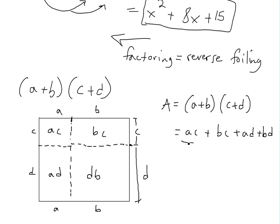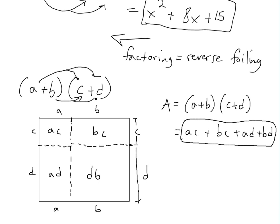So the total area is the summation of all of these: AC plus BC plus AD plus BD. And this is exactly FOIL — if you multiply A plus B times C plus D using the FOIL method, you get AC plus AD plus BC plus BD. Every single term is multiplied; it's the exact same result. So this is the proof of it.